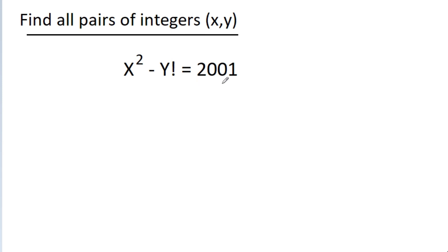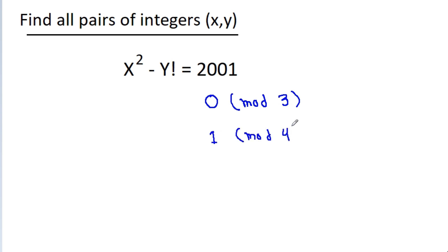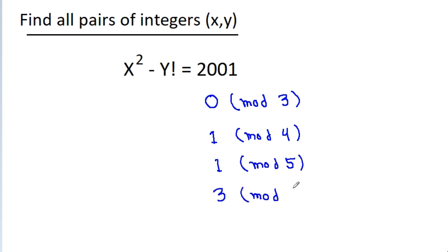If we divide 2001 by 3, then we get remainder 0, so it is equivalent to 0 mod 3. Similarly, it is equivalent to 1 mod 4 and 1 mod 5. And if we divide it by 6, then the remainder will be 3, so it is equivalent to 3 mod 6.